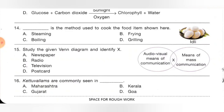Sixteenth one: Kettuvallams are commonly seen in which state? Option A: Maharashtra, B: Kerala, C: Gujarat, D: Goa. Kettuvallams are commonly seen in Kerala. Option B is the correct answer.